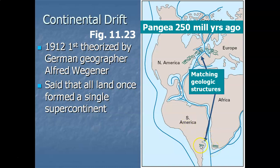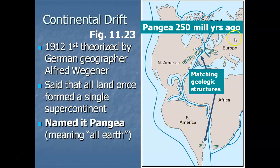Besides the continents seeming to match up like puzzle pieces, there is also similar geology — particular geologic structures matching up between Africa and South America, and between North America and Europe. In his 1912 article proposing continental drift, Wegener named this single supercontinent 'Pangea.' In Greek, 'pan' means all and 'geo' means earth — so Pangea was the one supercontinent that ultimately broke up and let the continents drift apart.